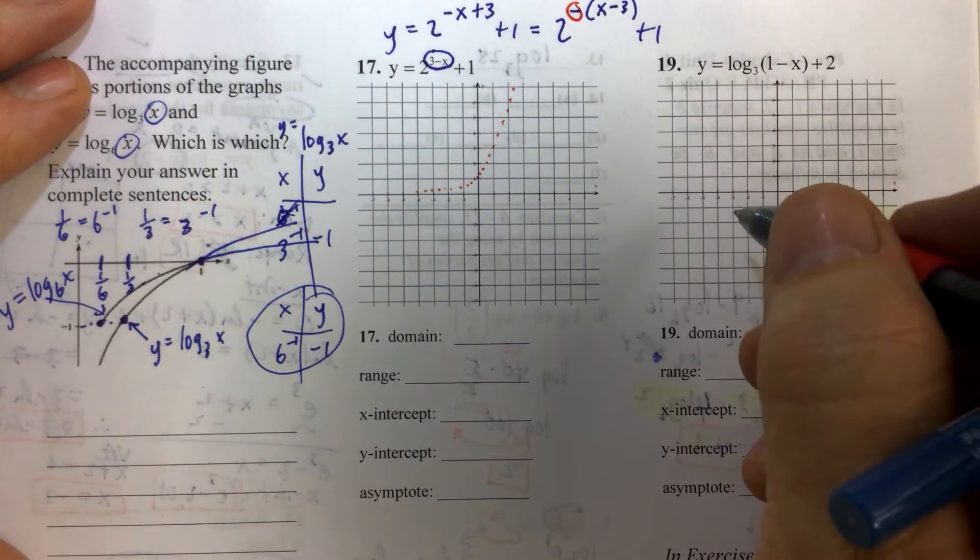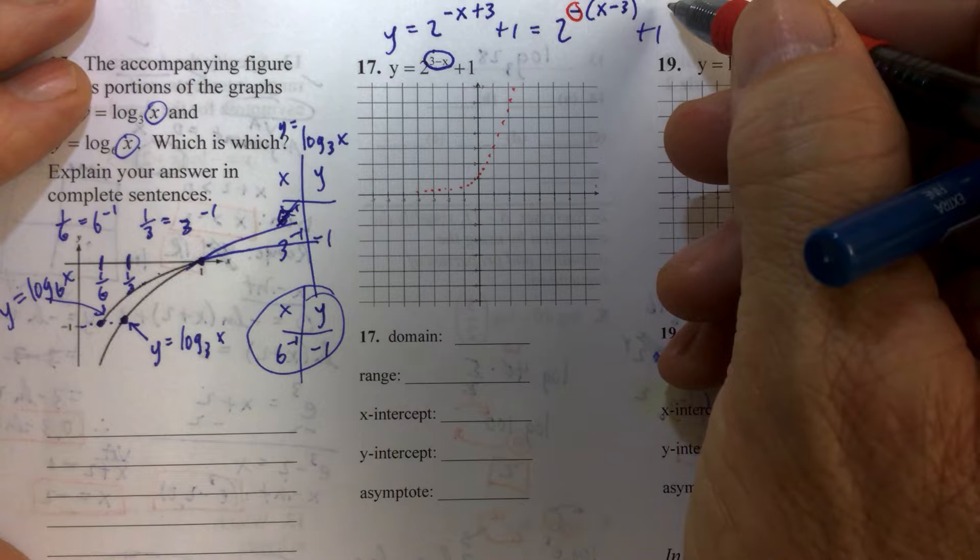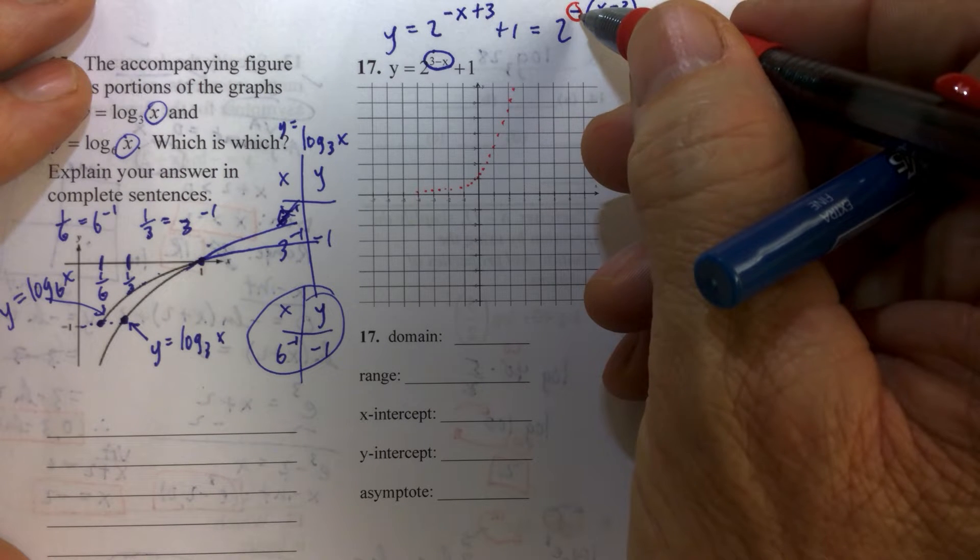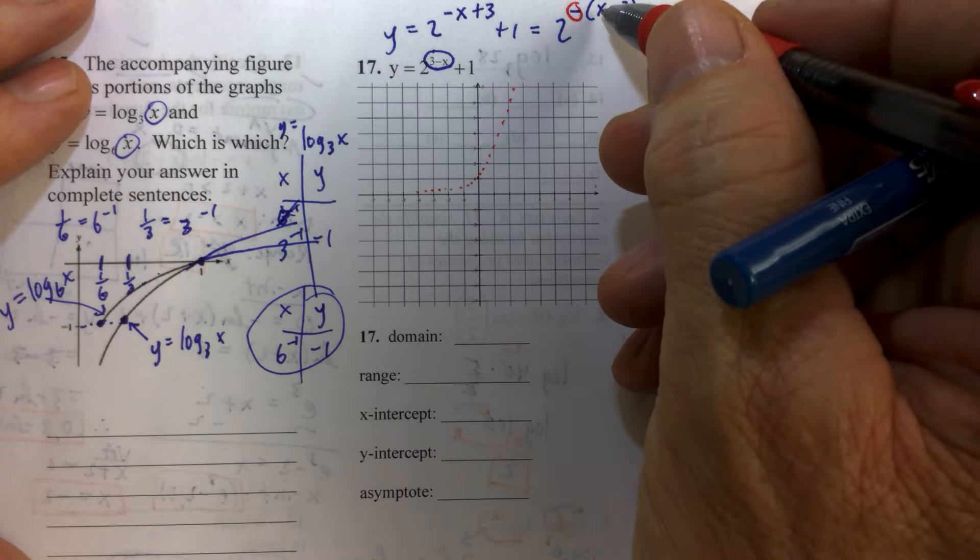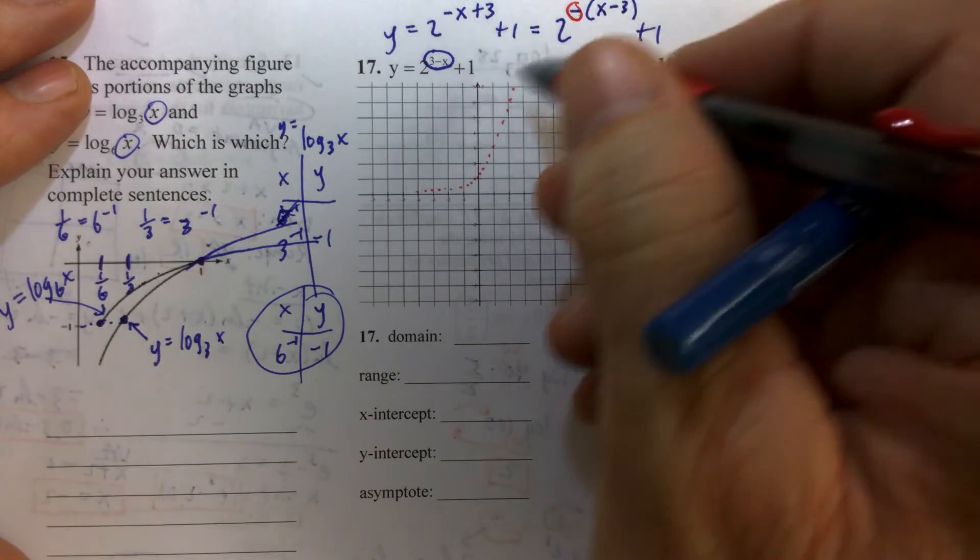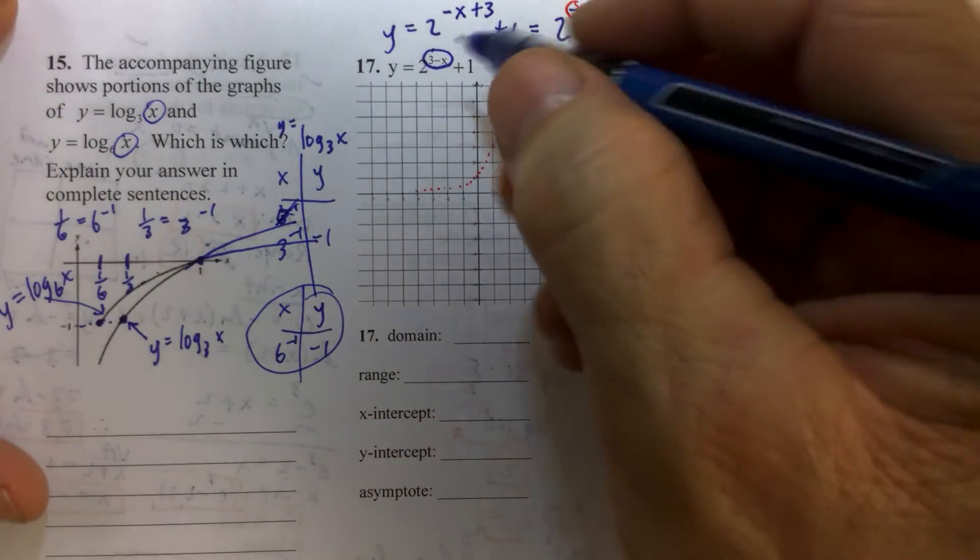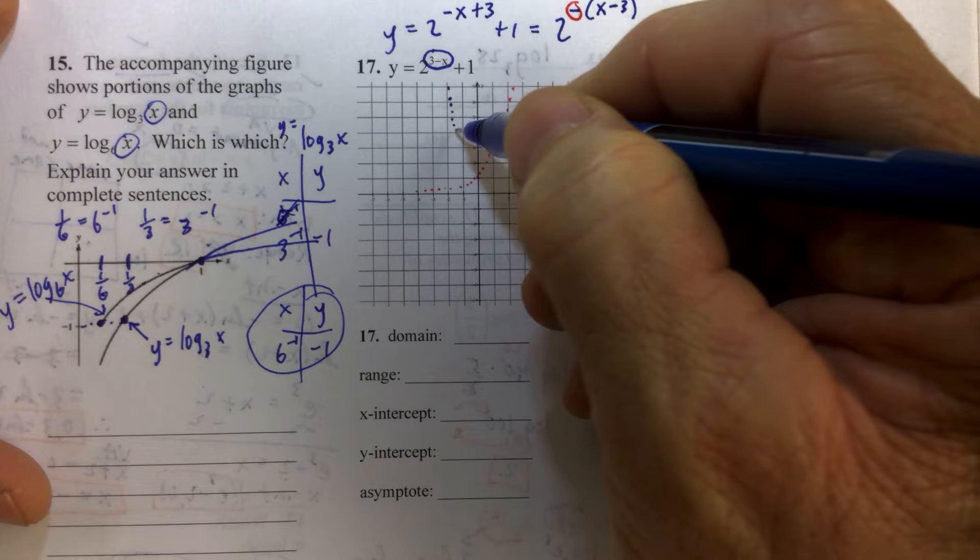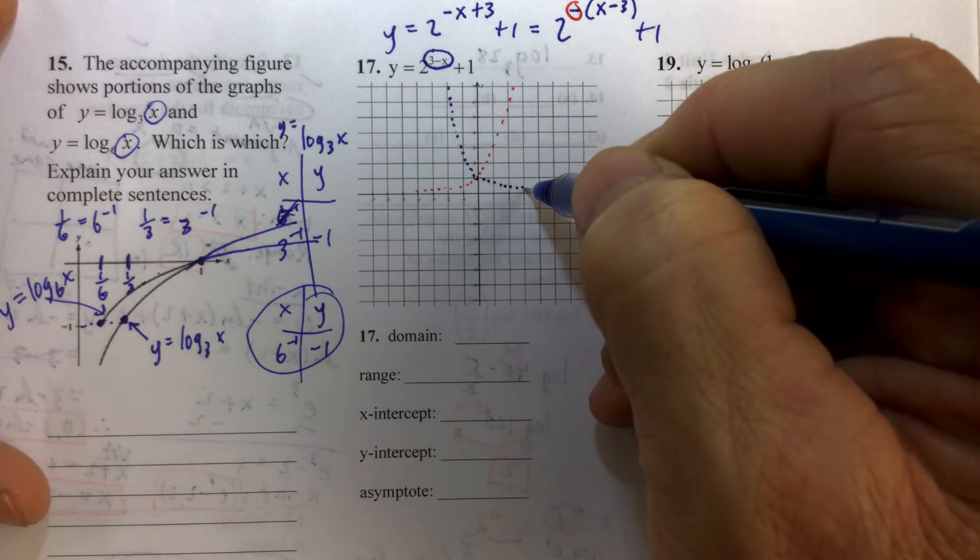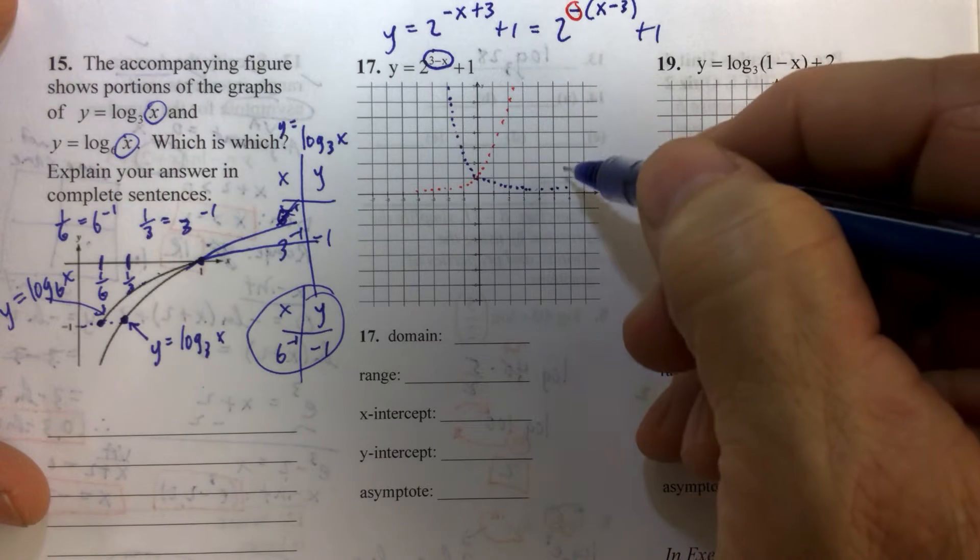Then we're going to apply our transformations. When we apply the transformation with a minus sign there, when you put a minus sign in front of the x, that means that's a reflection about the y-axis. So we're going to redraw our function with only one transformation: y equals 2 to the negative x.